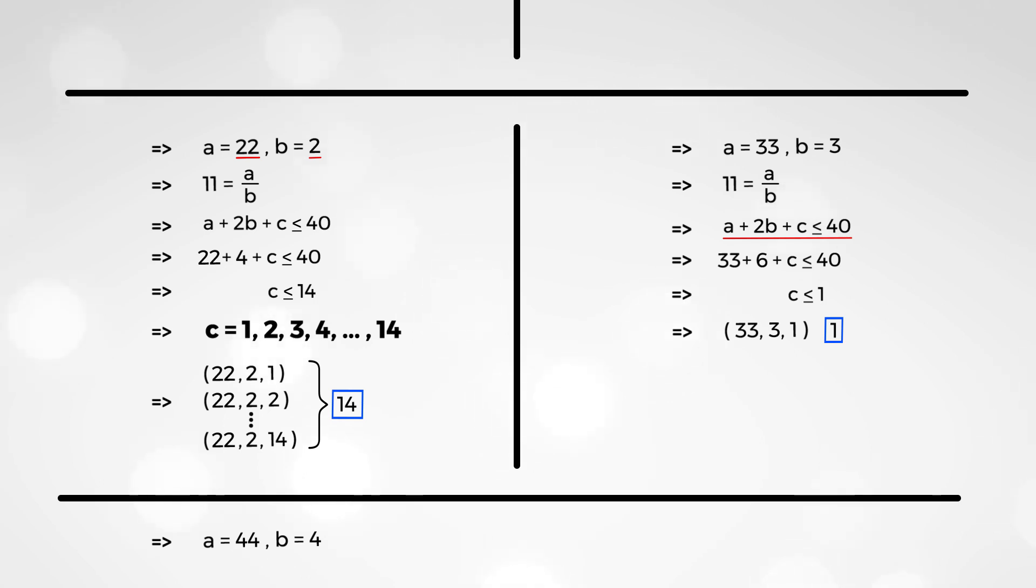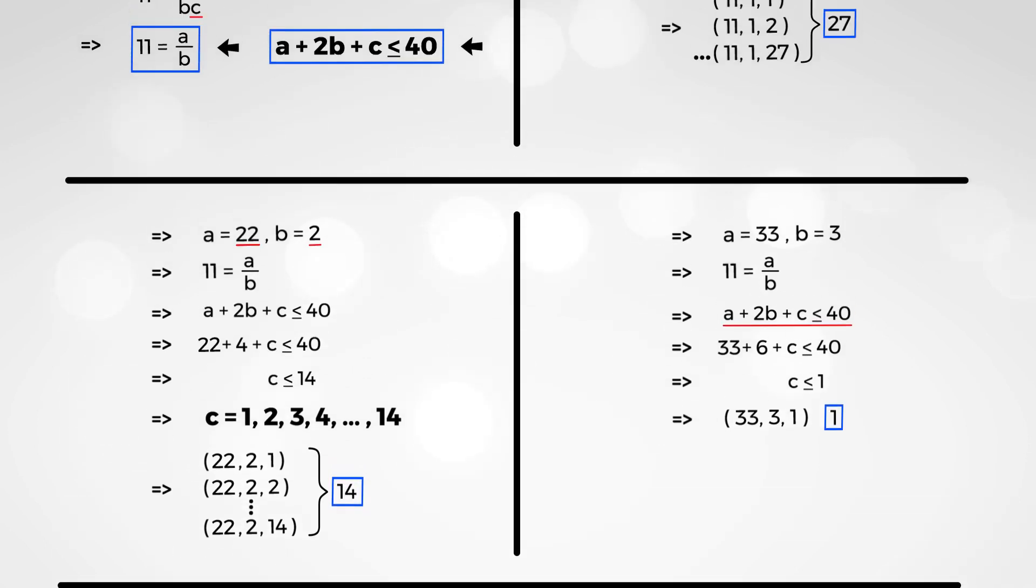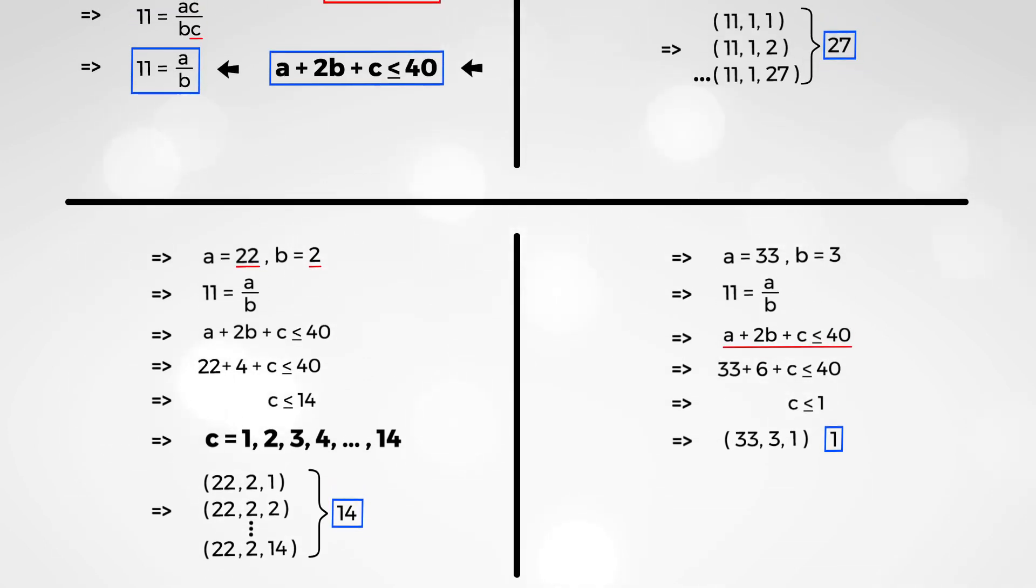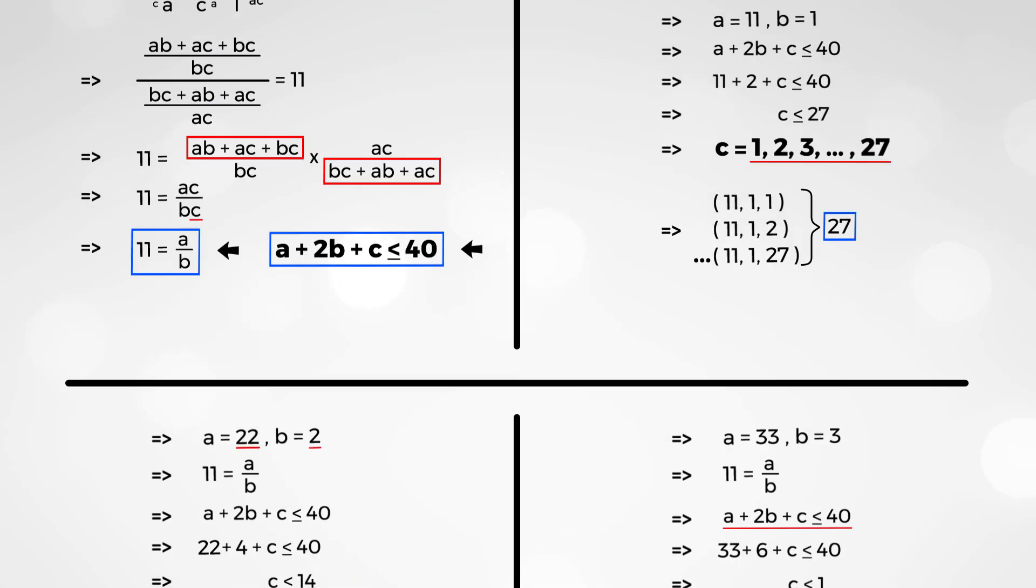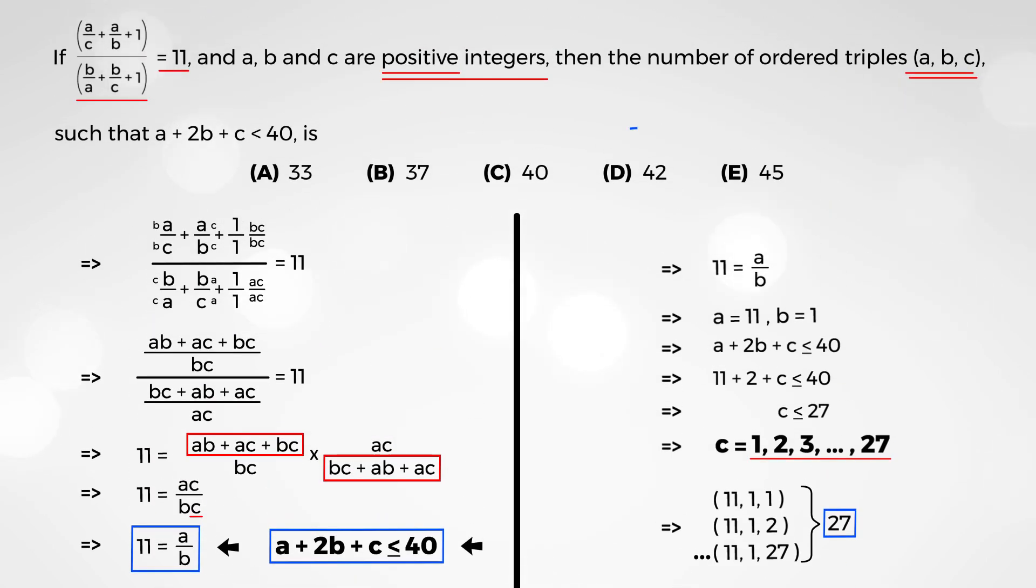So, the total number of ordered triples that we got is 1, 14, and 27. So, if you add those up, so the answer here is d.